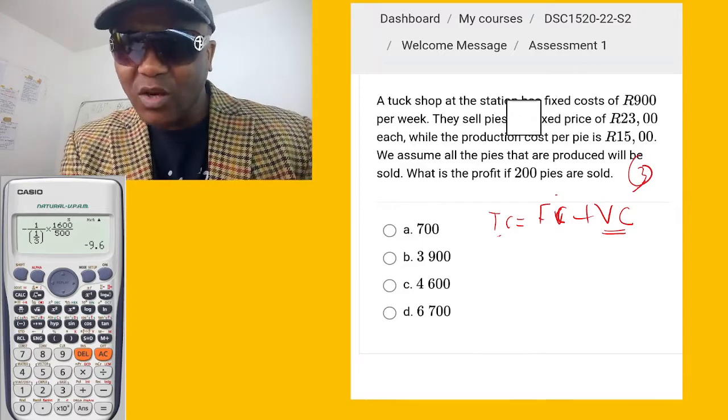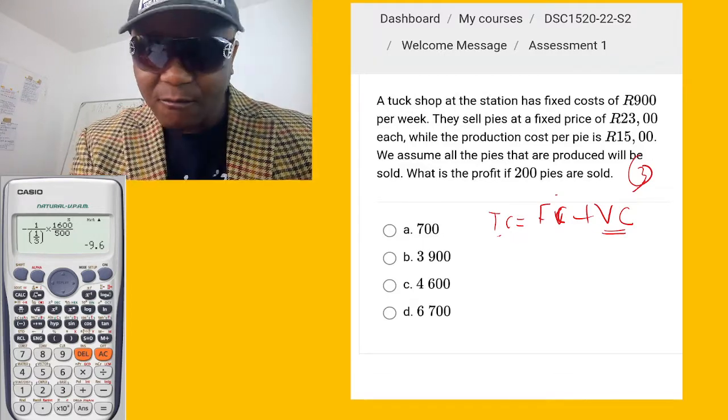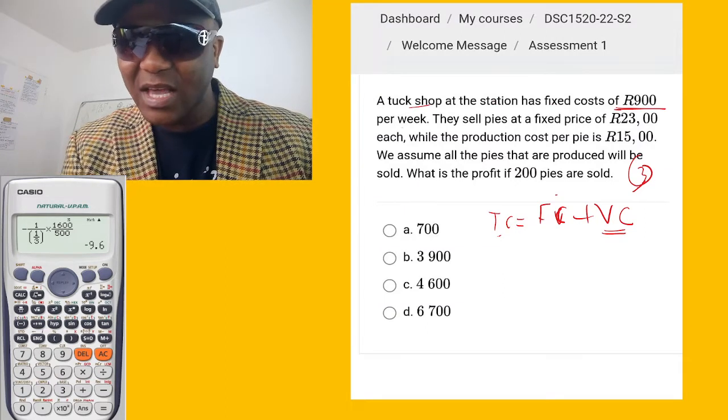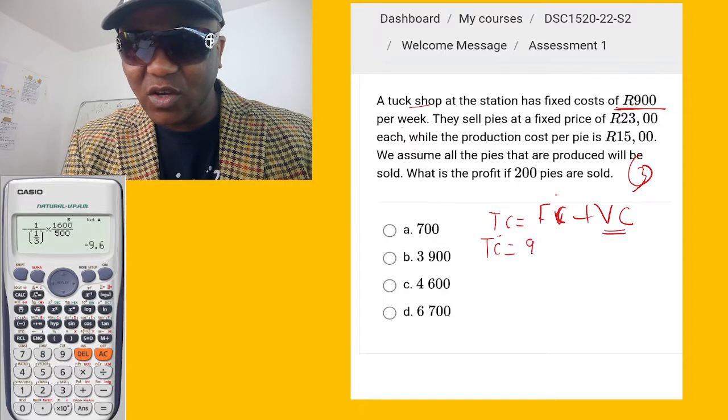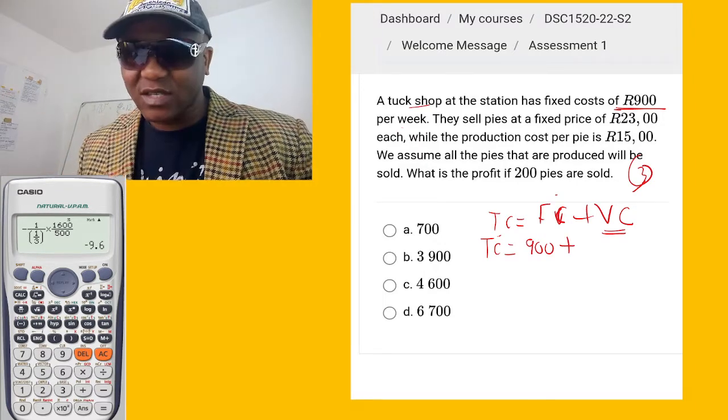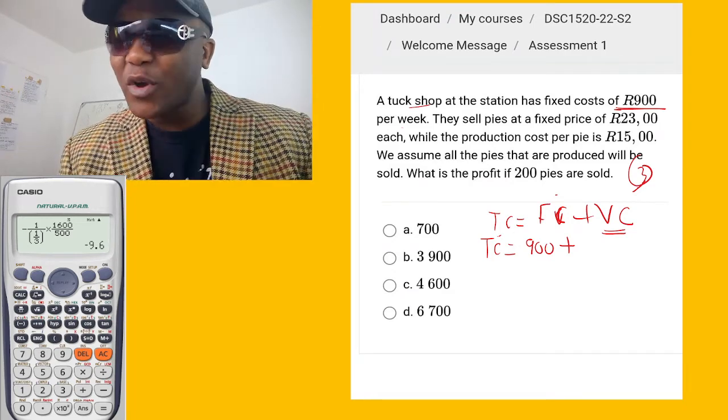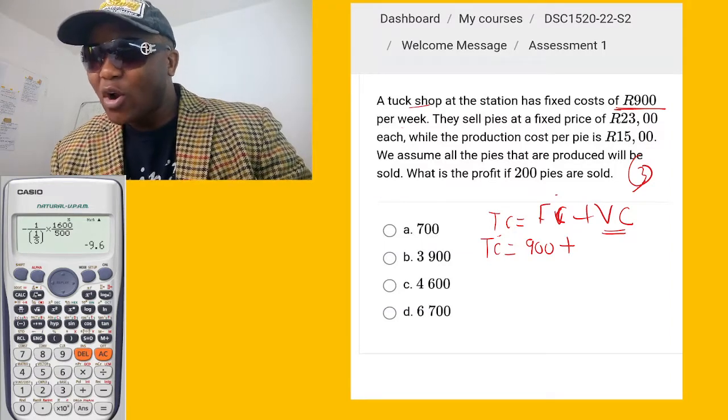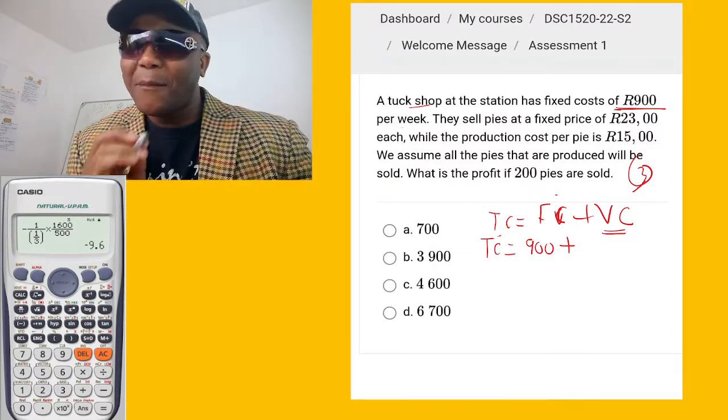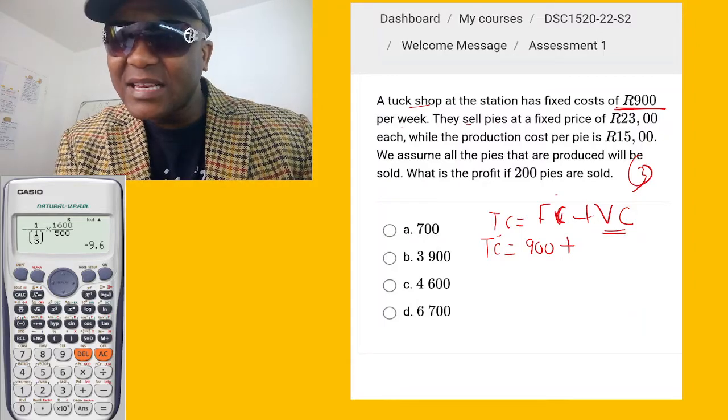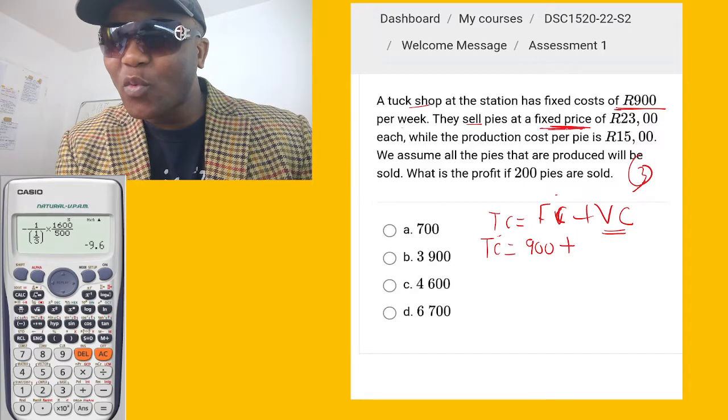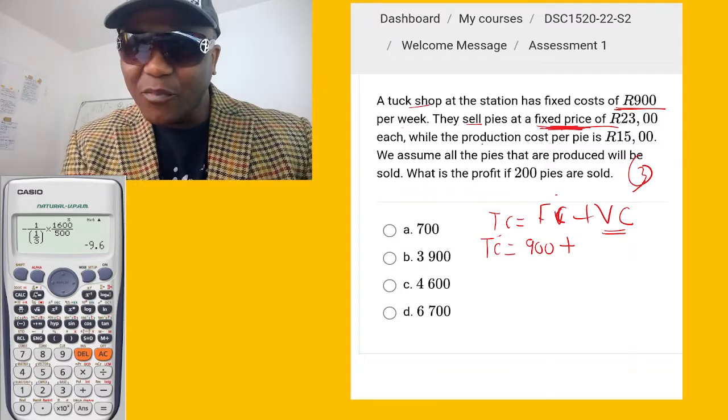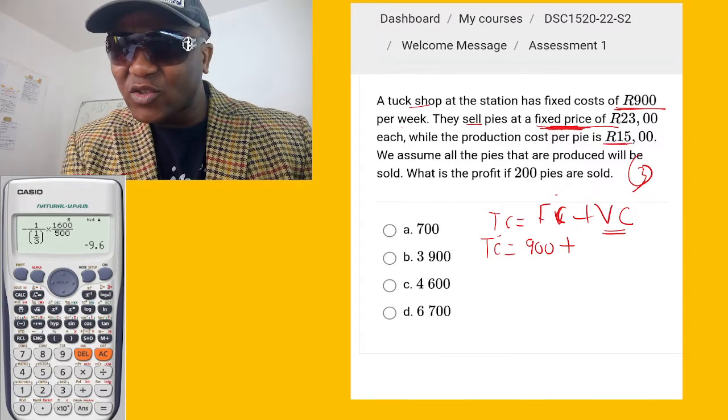Now let's get to the business, because that was not part of the question. So they say tuck shop at the station has a fixed cost. So this is a cost of the tuck shop per week, so we're gonna say Total Cost equals Fixed Cost equals 900. Now what about the variable cost? We don't know what the variable cost is. How we gonna get the variable cost? But look here, they say they sell pies at a fixed price. So we don't have a variable cost, they talk about price now. Leave the price for now.